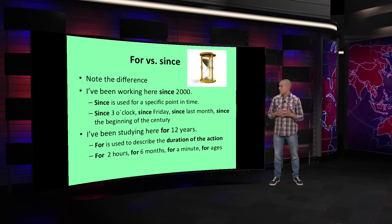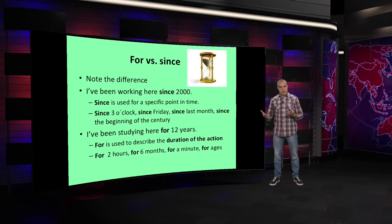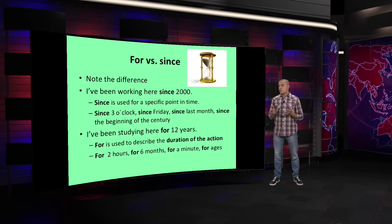Now, an example with FOR — the other side — would be: 'I have been studying here for 12 years.' FOR gives us the period, the duration, the length of that action. I've been studying here for 12 years — so during that time, you have been studying there. FOR is used to describe the duration of the action.